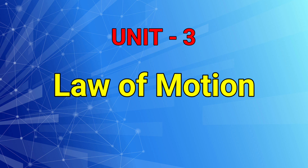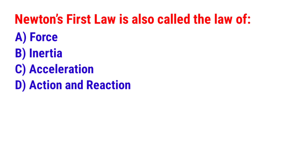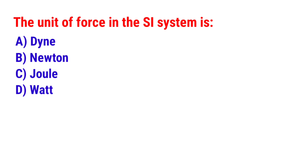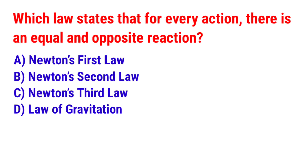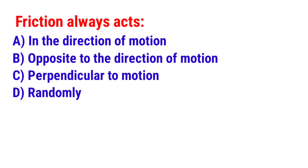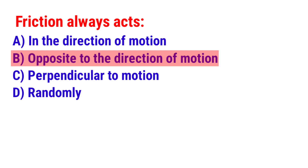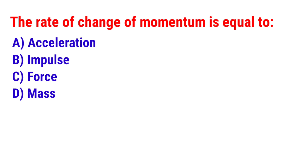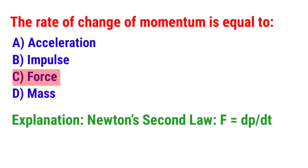Unit number 3: Law of Motion. Next question: Newton's first law is also called the law of? The answer is option B — Inertia. Next question: The unit of force in the SI system is? The answer is option B — Newton. Next question: The rate of change of momentum is equal to? The answer is option C — Force.